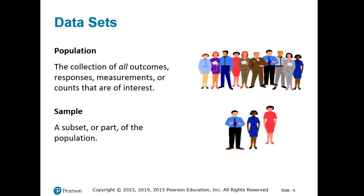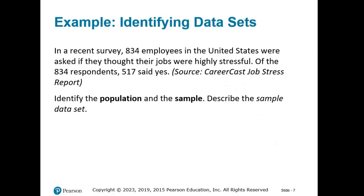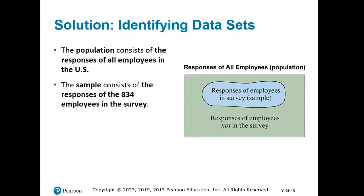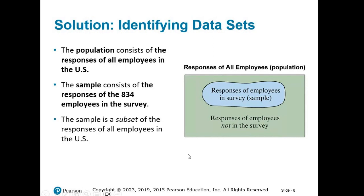Let's do an example to make sure we understand the difference between population and sample. In a recent survey, 834 employees in the United States were asked if they thought their jobs were highly stressful. Of the 834 respondents, 517 said yes. The population consists of the responses of all employees in the U.S. The sample consists of the responses of the 834 employees in the survey. The sample data set consists of 517 people who said yes and 317 who said no. The Venn diagram here illustrates that the survey responses are a subset of the population.